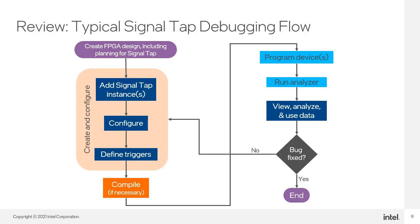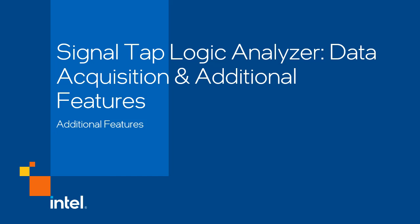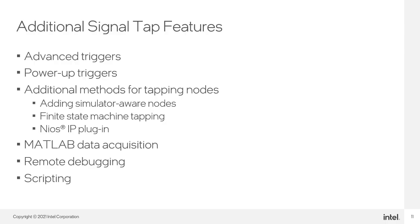That completes the general debugging flow for using the SignalTap Logic Analyzer. Over the course of this training, we created and configured a SignalTap instance, compiled the design, programmed the target device, ran the logic analyzer, and examined the captured data. However, the tool has a number of additional useful features you may find extremely helpful depending on your unique debugging needs. Here is a list of the features we'll look at in this section. For more details on a particular feature, see the Debug Tools User Guide linked at the end of this training.